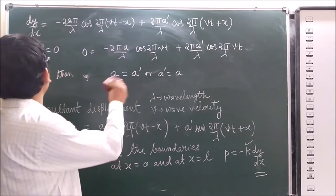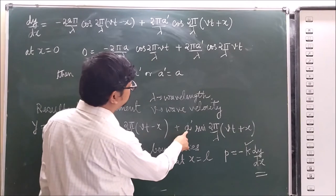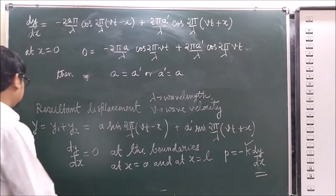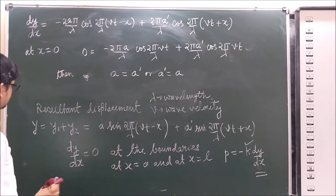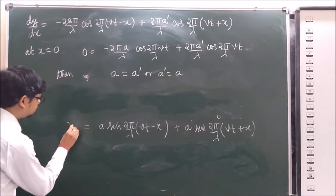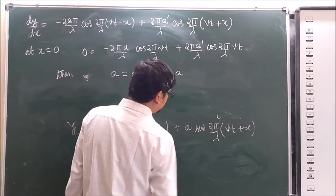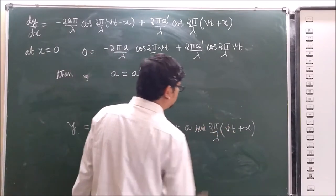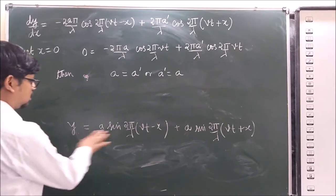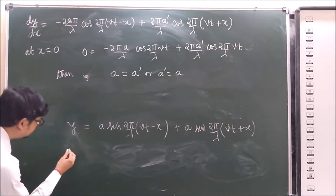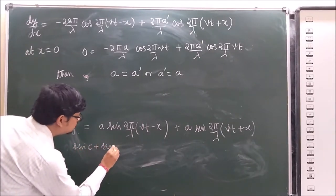So a' = a, meaning there is no phase reversal of the reflected wave. Therefore we can substitute a' with a, and the resultant wave equation becomes y = a sin(2π/λ)(vt − x) + a sin(2π/λ)(vt + x).